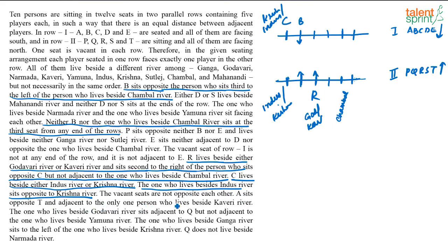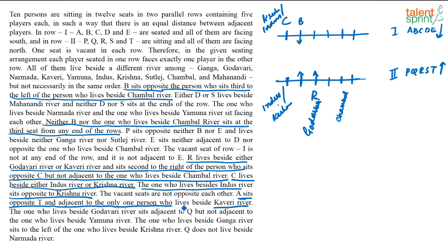A sits opposite to T and is adjacent to the only person who lives beside Kaveri River. Since A is in row 1, the Kaveri person is also in row 1. This means R cannot be beside Kaveri, so R must live beside Godavari. We now need to place A and T such that A is opposite T and adjacent to the Kaveri person.